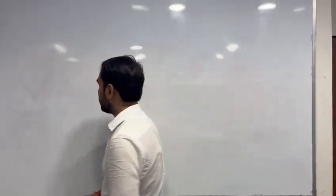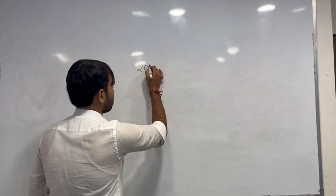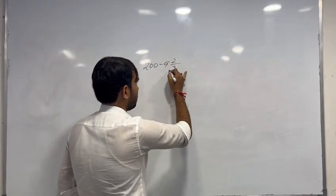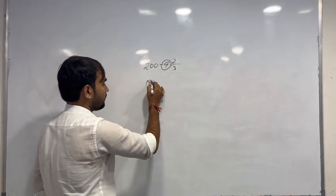If you have a mixed fraction to subtract, let me give you an example. If I am subtracting 9 and 2/3 from 200, I am taking one greater integer, that will be 190, and subtract.